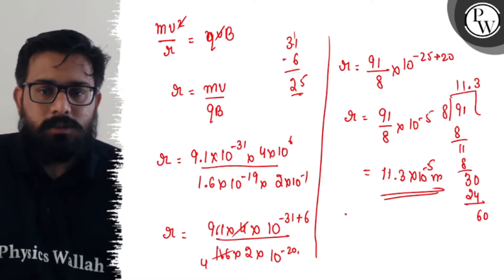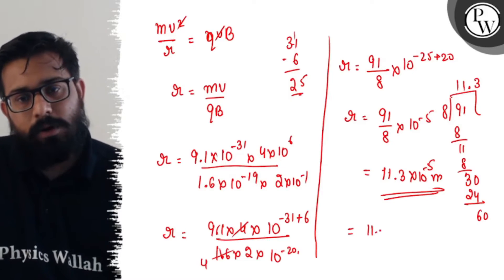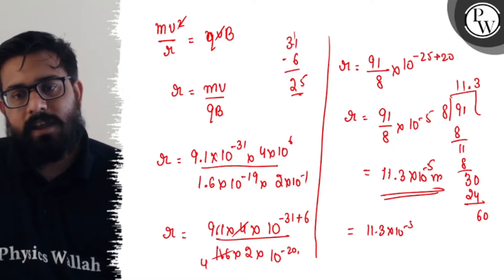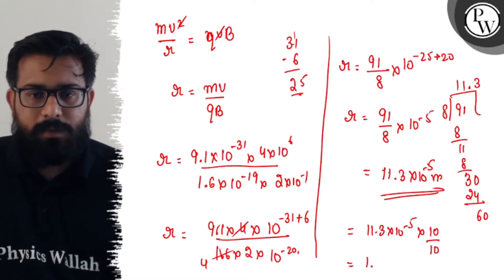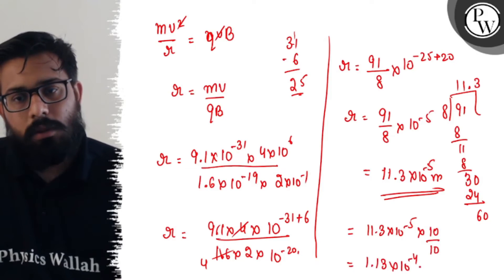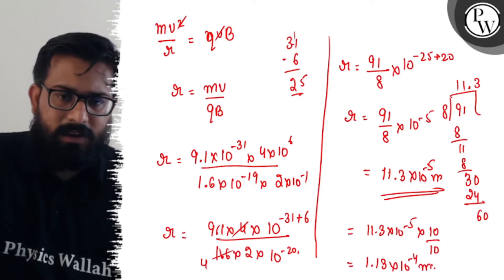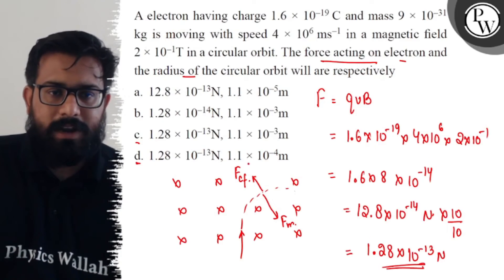11.3 × 10^-5, it's not matching. So I multiply 11.3 × 10^-5 by 10 and divide by 10. On doing so I get 1.13 × 10^-4 meter. So 1.1 × 10^-4, 1.1 × 10^-4.